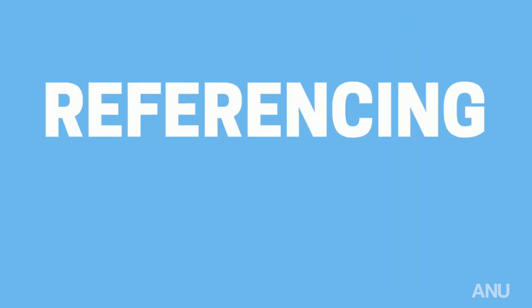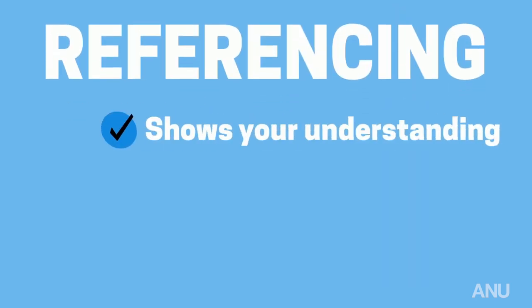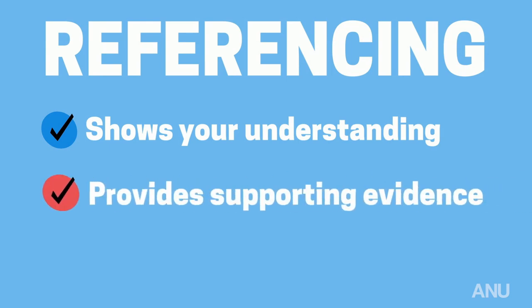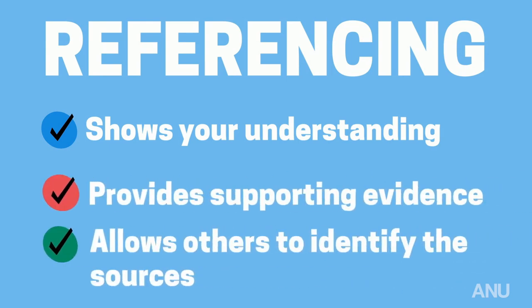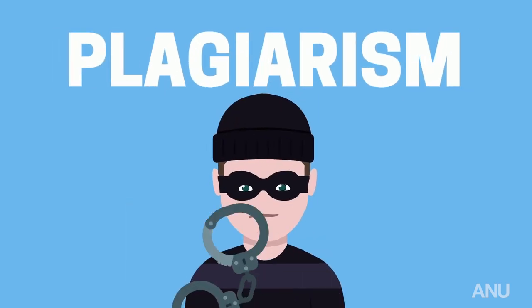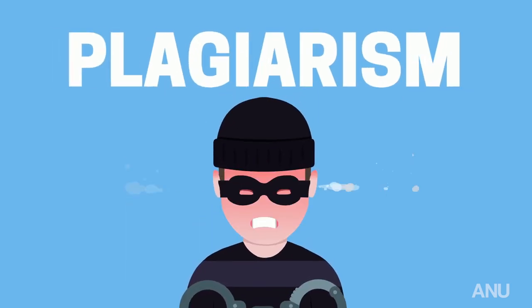Referencing or citing correctly shows your understanding of the topic, provides supporting evidence for your ideas, arguments or opinions, allows others to identify the sources you have used, and helps avoid the worst-case scenario in your academic life: accusations of plagiarism.